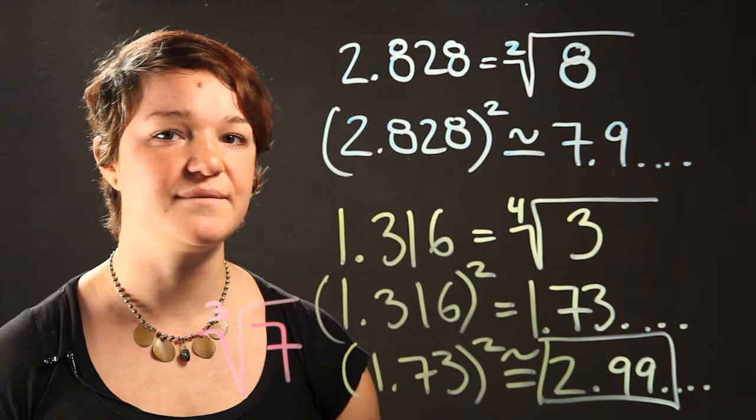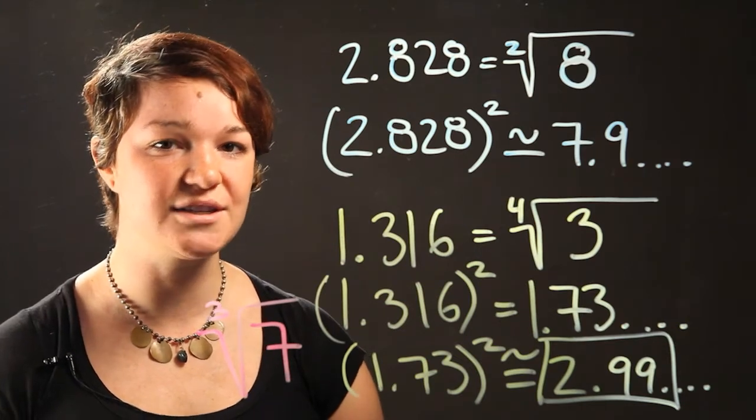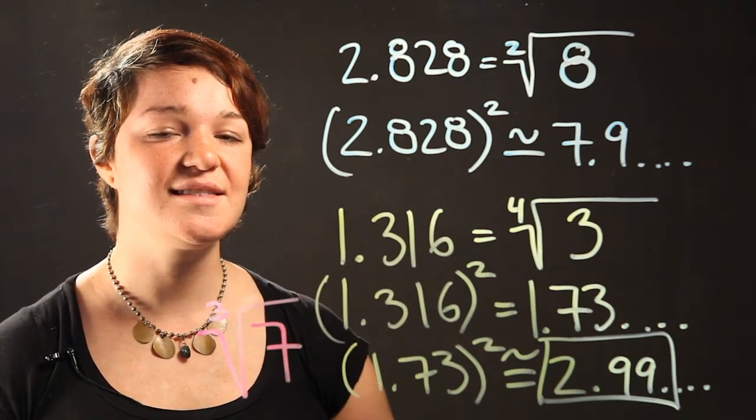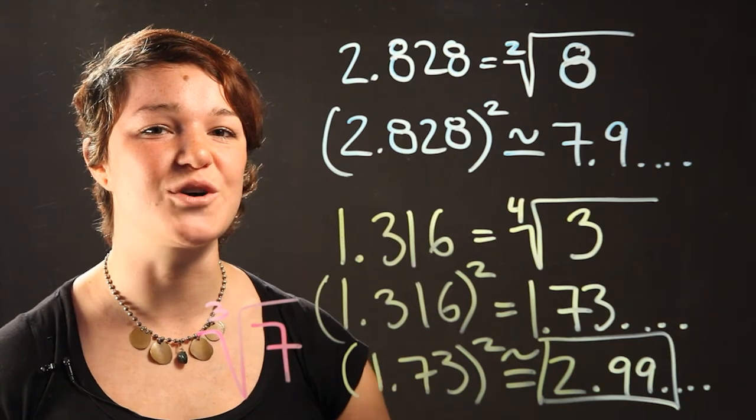So there you have it. That's how you convert decimals into radicals. Thanks for watching and come back for more. I'm Dr. K.